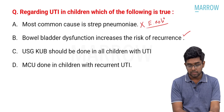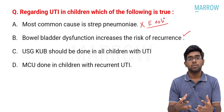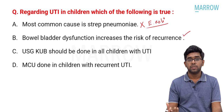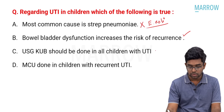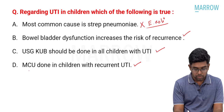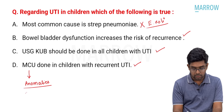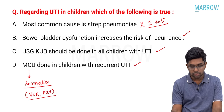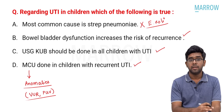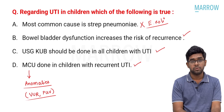Ultrasound KUB should be done in all children with UTI — it is a screening test giving an overview of kidney and urinary tract structure. MCU should be done in children with recurrent UTI to detect anomalies such as VUR and posterior urethral valve, which are associated with recurrent UTI and can be picked up by MCU.